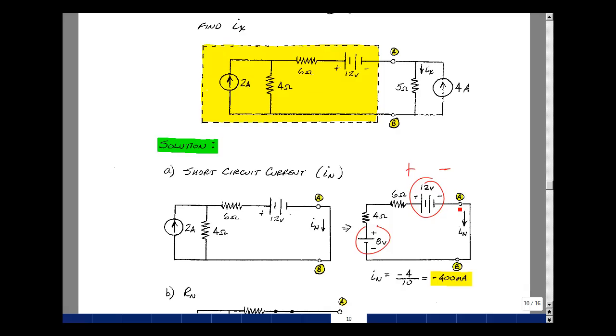I want to find the current in this direction, which would mean I would need to know the voltage going with this polarity, which would actually be a minus 4 volts. So that divided by the total resistance of 10 ohms would give me the current. That's minus 400 milliamps.